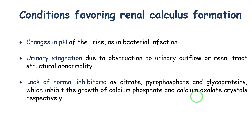Another factor favoring stone formation is urine stagnation. When there is obstruction to the flow of urine — for example, due to prostate enlargement or structural abnormalities such as stenosis — stagnation of urine increases the contact period between the urine, its metabolites, and the kidney, which favors stone formation.